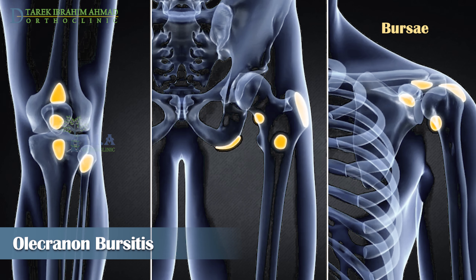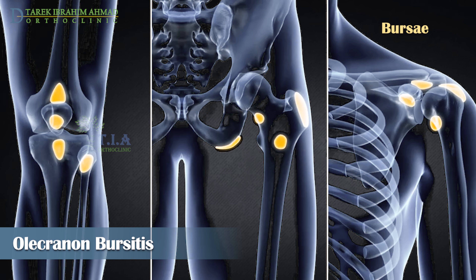There are many bursae located throughout the body that act as cushions between bones and soft tissues, such as muscles, tendons, and skin. They contain a small amount of lubricating fluid that allows the soft tissues to move freely over the underlying bone.